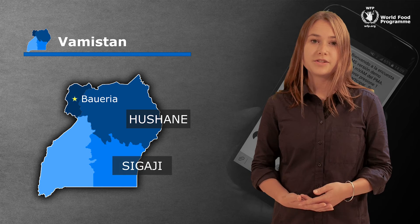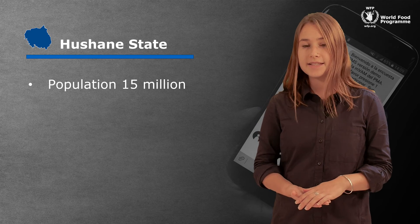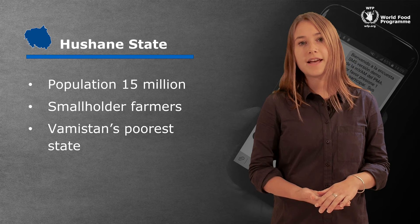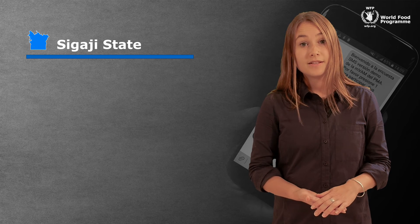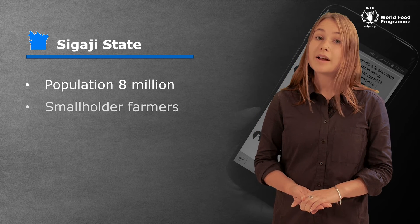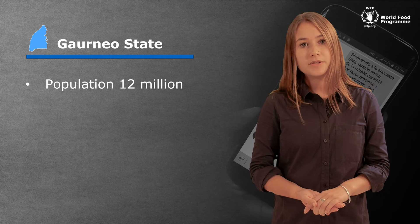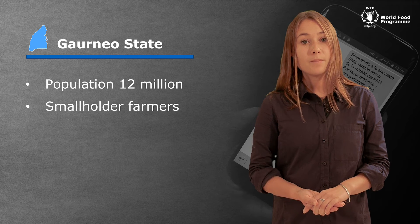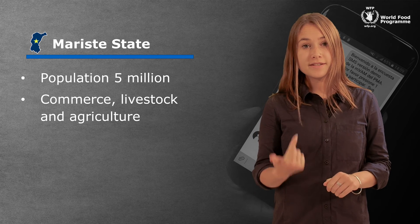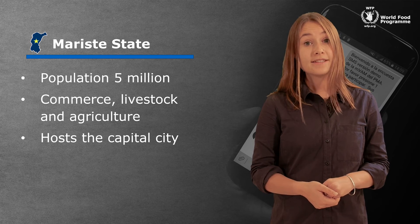The country is made up of four governorates: Hushain, Sigarji, Gornio and Mariste. Hushain has a population of 15 million — the population are mainly agricultural smallholders and it is Vamistan's poorest state. Sigarji state has a population of 8 million, with the main livelihood also being agricultural smallholders. Gornio state has a population of 12 million, most of whom are agricultural smallholders. Mariste state has a population of 5 million; the main livelihoods are commerce, livestock and agriculture. The capital, Baueria, is located here, as is your country office. It's Vamistan's richest state.